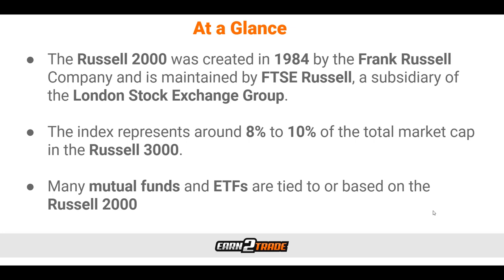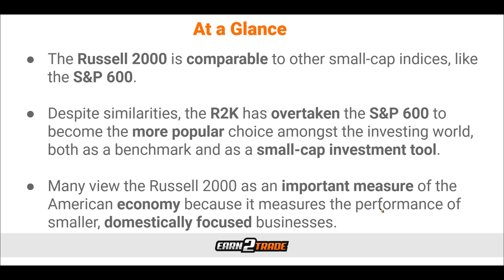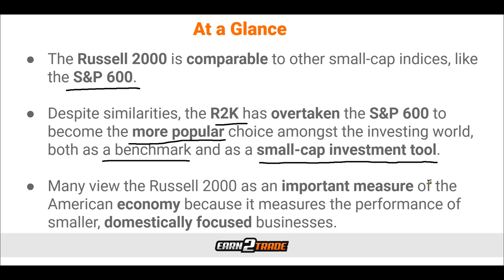Some key facts about the Russell 2000: it was created in 1984 by the Frank Russell Company and is currently maintained by the FTSE Russell, a subsidiary of the London Stock Exchange Group. The index represents around 8 to 10% of the total market cap of the Russell 3000. Many mutual funds and ETFs are tied to it. The Russell 2000 is comparable to other small cap indices like the S&P 600, but has overtaken the S&P 600 to become the more popular choice as both a benchmark and a small cap investment tool. Many view it as an important measure of the American economy because it measures the performance of smaller, domestically focused businesses.